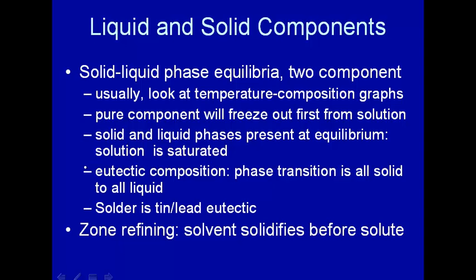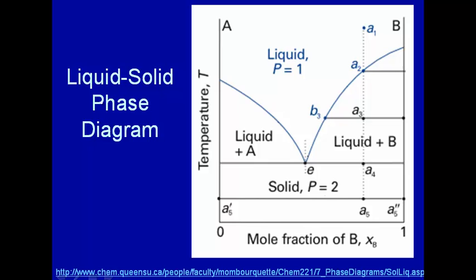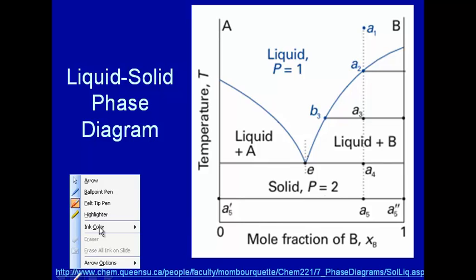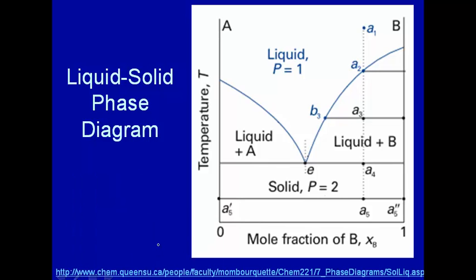This is an example of a liquid-solid phase diagram. So on the y-axis here we have temperature and on the x-axis we have mole fraction. So this makes this a temperature composition phase diagram. And let's look at high temperature. At high temperature, it's high enough so everything is a liquid. So in this region we just have liquid. We have liquid A and liquid B.